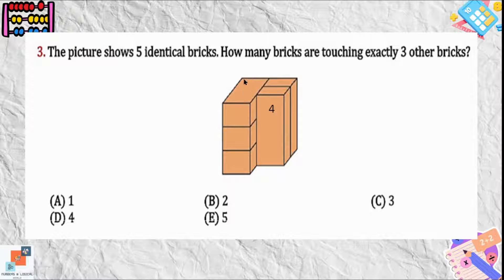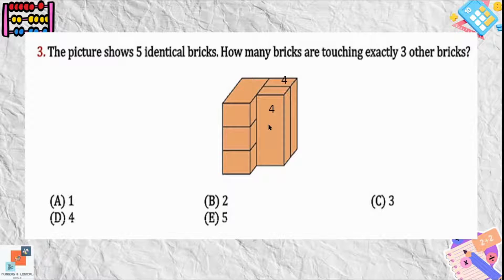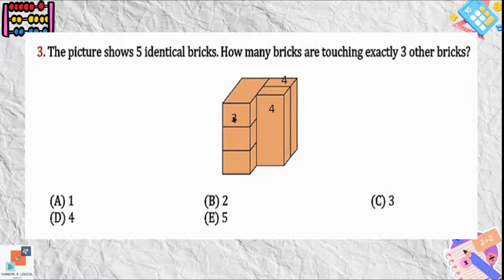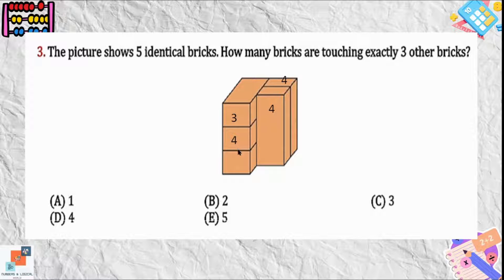The brick at the back is touching the pile of three bricks and one brick is in front of it, so it is also touching four bricks exactly. The brick at the top has two bricks beside it and one brick under it, so it is touching three bricks exactly. The brick in the center is touching four bricks exactly — one above, one below, and two beside it.